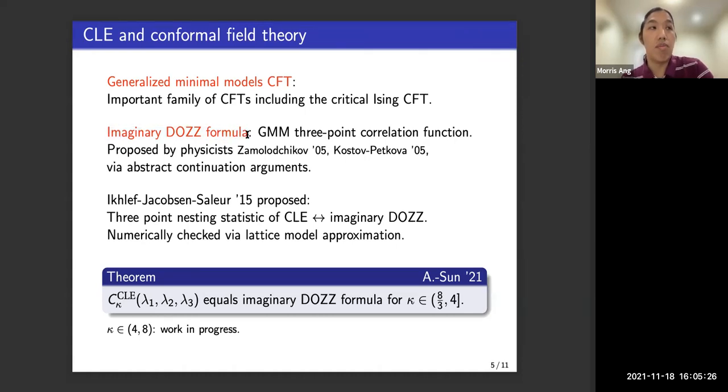So the three-point correlation function for these generalized minimal models is called the imaginary DOZZ formula. And this was introduced by physicists using methods that are similar to analytic continuation. More recently, physicists proposed that this CLE three-point nesting statistic should agree with the imaginary DOZZ formula. And they ran some simulations and they checked that this was indeed plausible.